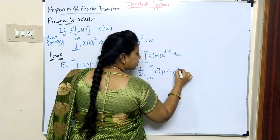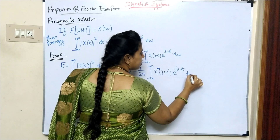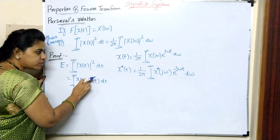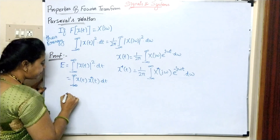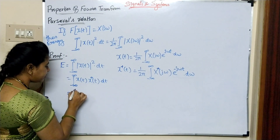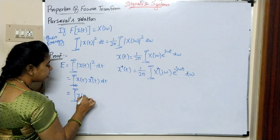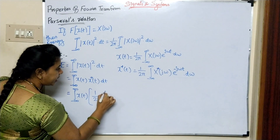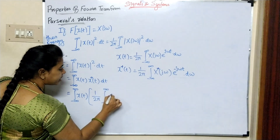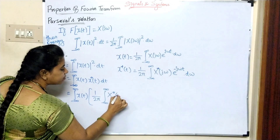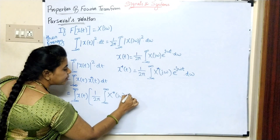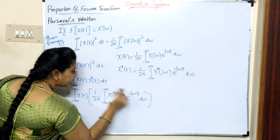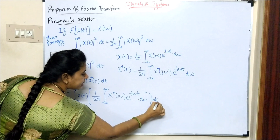Substituting, the conjugate of x of T gives conjugate of x of j omega into e to the power minus j omega t into d omega. So energy becomes integral minus infinity to infinity x of T into 1 divided by 2pi integral minus infinity to infinity x of j omega conjugate into e to the power minus j omega t into d omega.